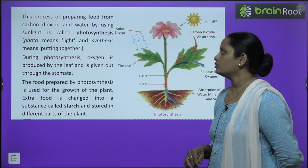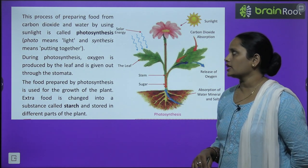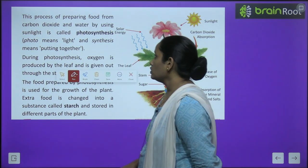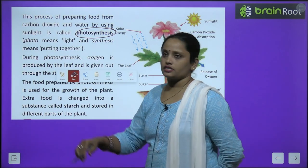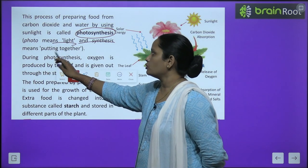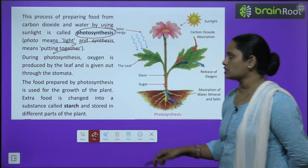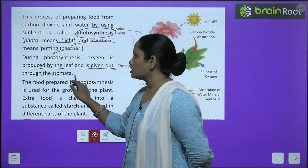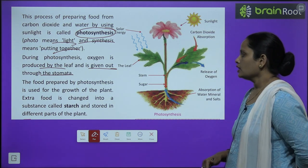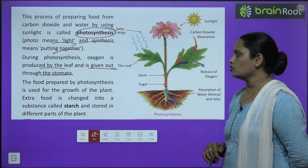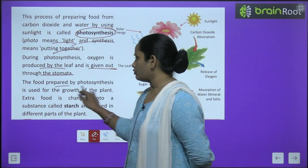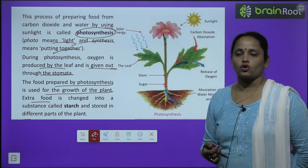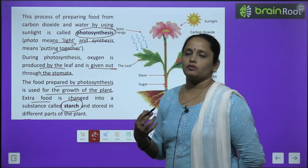This process of preparing food from carbon dioxide and water by using sunlight is called photosynthesis. Photo means light and synthesis means putting together. During photosynthesis, oxygen is produced by the leaves and is given out through the stomata. The food prepared by photosynthesis is used for the growth of the plant. Extra food is changed into a substance called starch and stored in different parts of the plant.